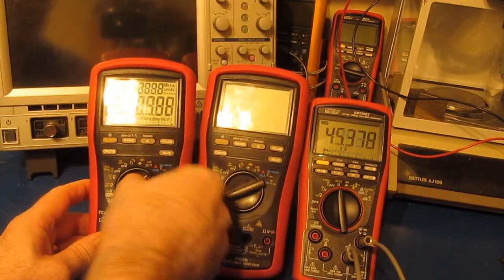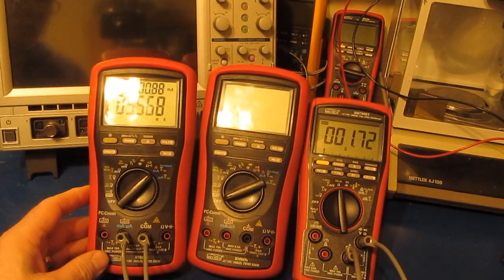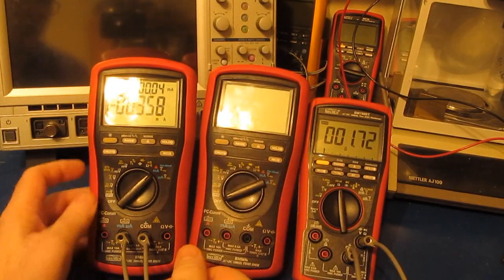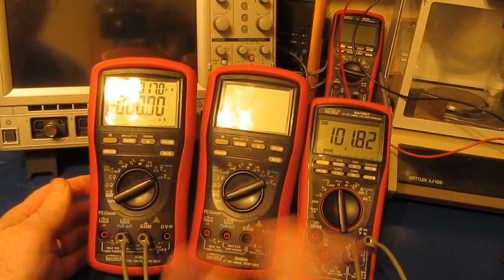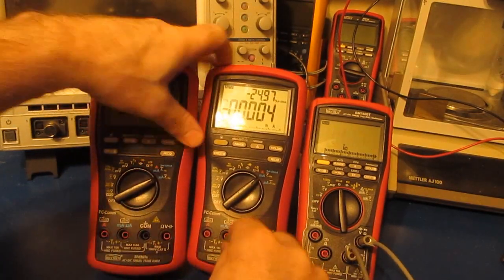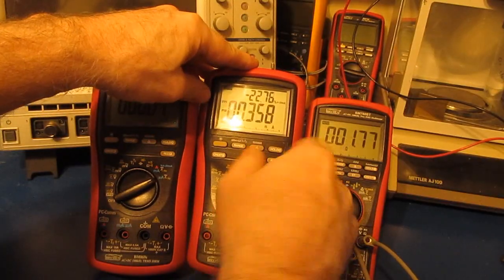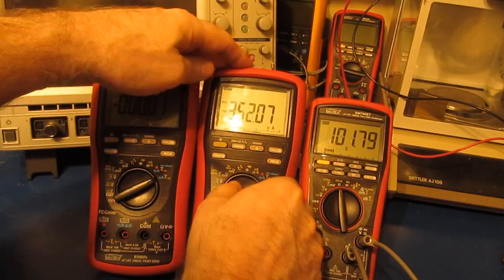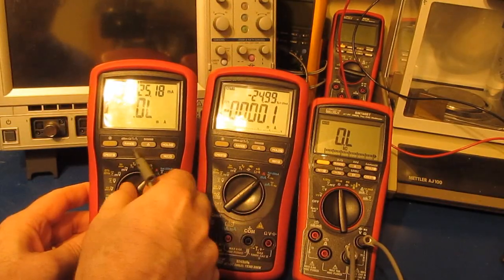can see as I rotate it to the milliamp, it now reads 1.72 ohms versus the microamps at 101 ohms. We can compare these two meters - let's see: 1.77 and 101.79. So now what we'll do